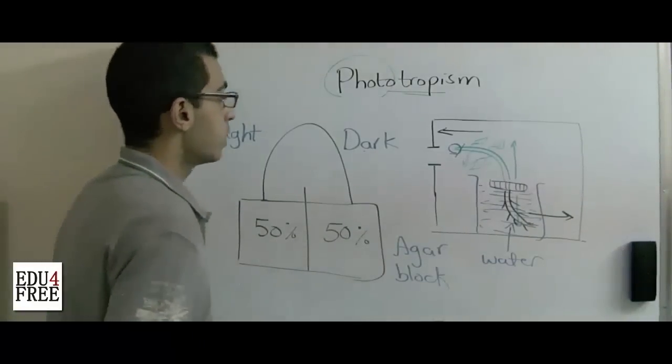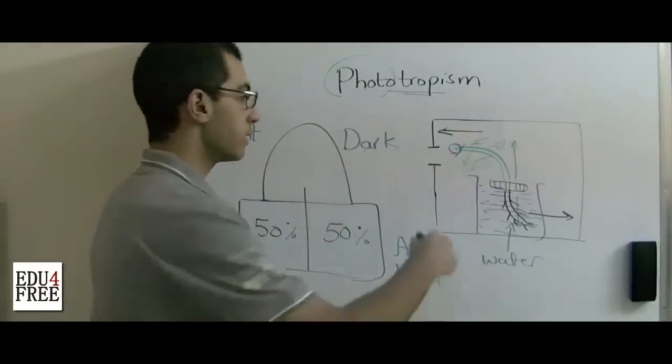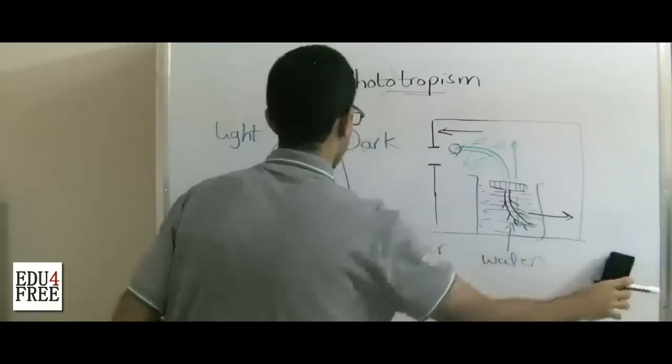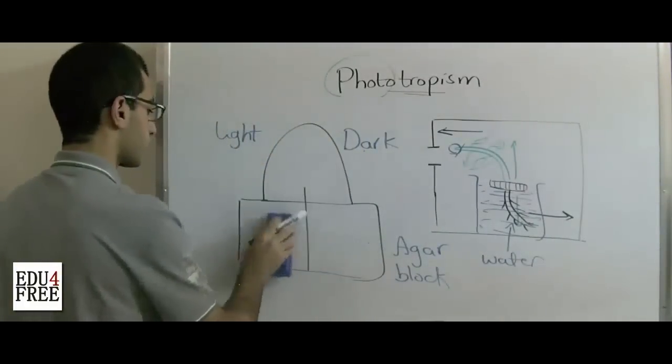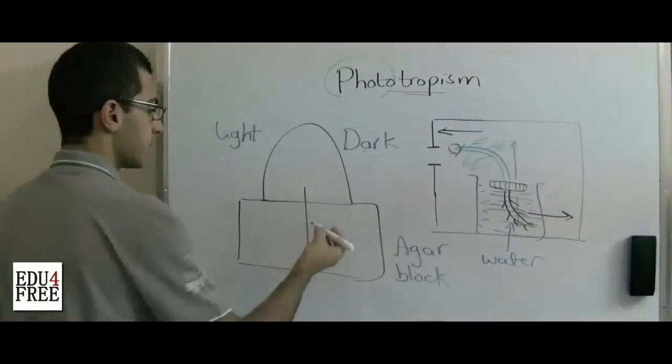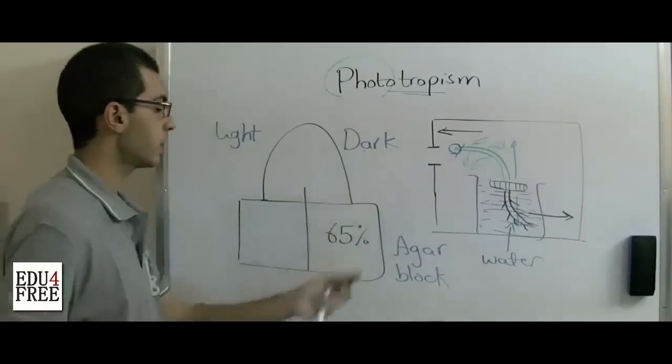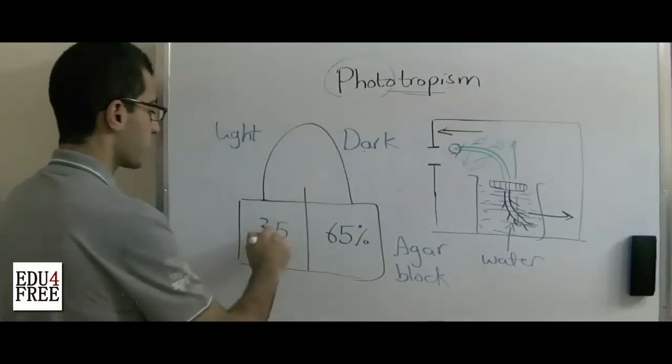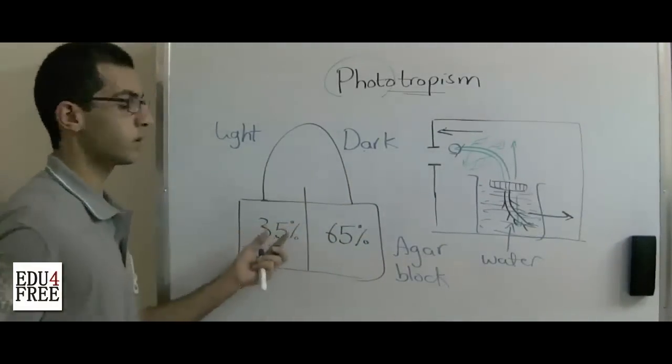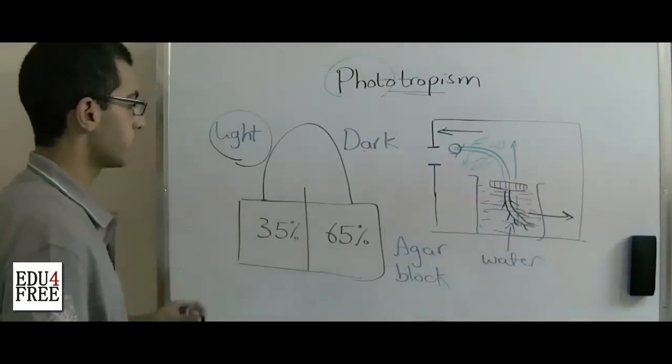But when the light is found on one side and darkness is found on the other side, the ratio is 65% of the auxins are found on the dark side and 35% of the auxins are found on the bright side, or the side where the light is found.